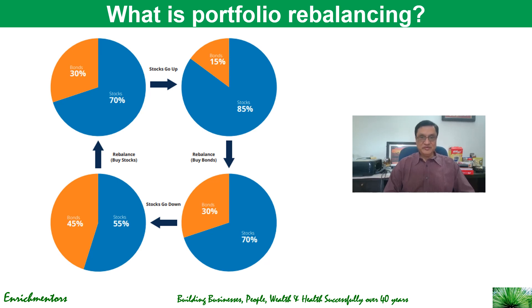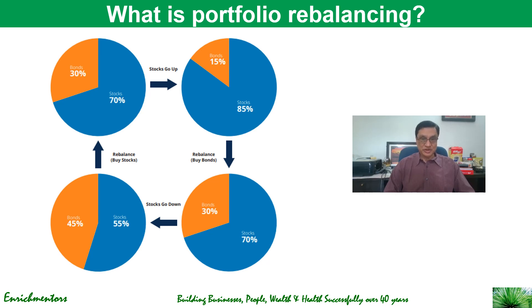Now over a period of time — one month, two months, six months, a year — stocks went up, stock values went up, the market went up. So your stocks allocation valuation becomes higher, while bonds probably don't grow at the same rate. Your stock starts contributing 85% — that is the drifted allocation. To rebalance, you sell some stocks and buy some bonds, bringing it back to a 70/30 allocation, and your portfolio gets rebalanced.